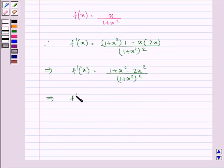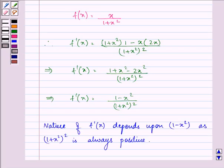That gives us f dash x equal to 1 minus x square upon 1 plus x square the whole square. Now, here the nature of this derivative depends on the numerator that is 1 minus x square, as 1 plus x square the whole square, that is the denominator, is always positive.